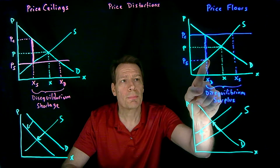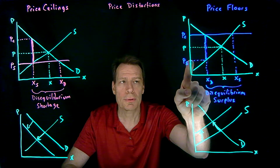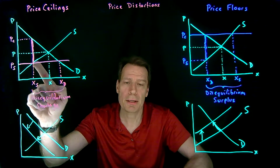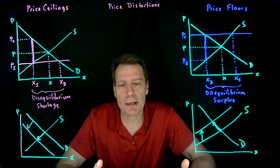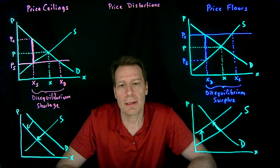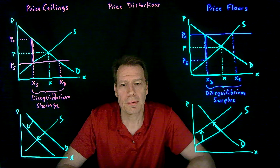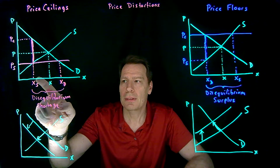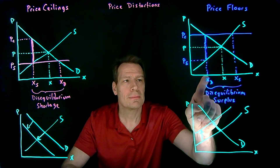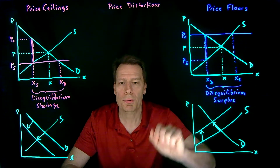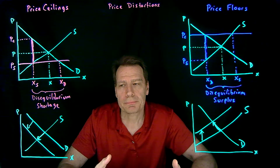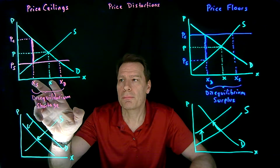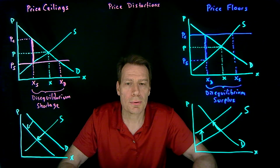We'd have to multiply the per unit effort cost by the number of units being sold to get the total effort cost expended by firms and by consumers. Now we can think about what this does to our efficiency result. The first part is that we're no longer producing the goods between what's being produced after the policy and what was produced before. So the surplus that used to accrue to consumers and producers from the production of those goods will certainly no longer exist.